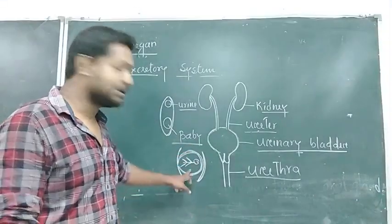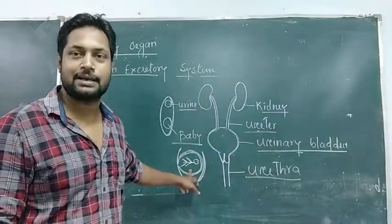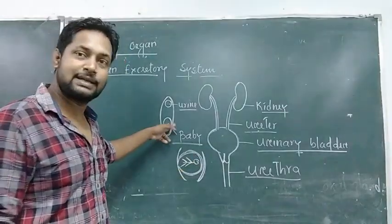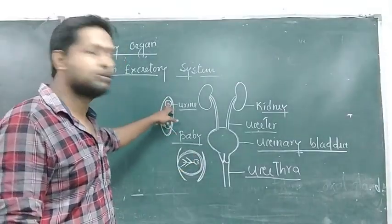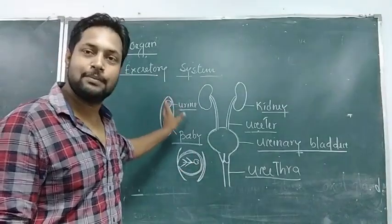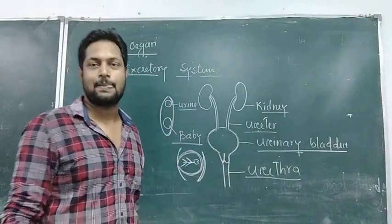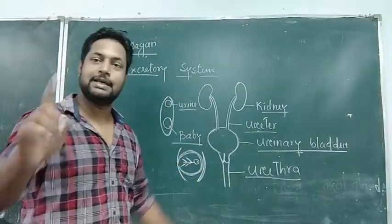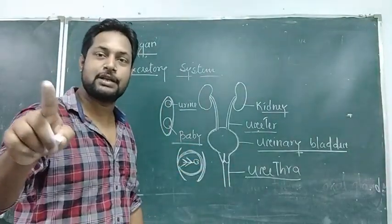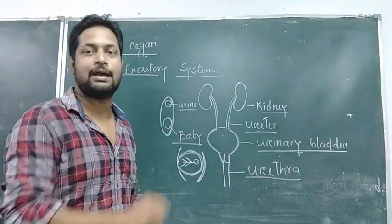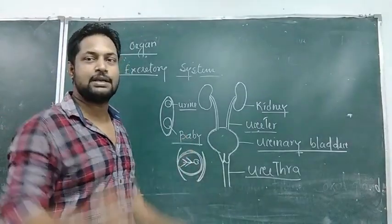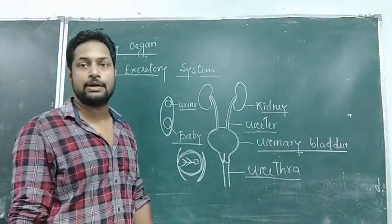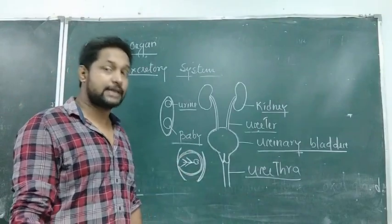The uterus will lead to the uterus. They are used to carry urine. The uterus will lead to your urinary genital system. There is a urinary genital system.